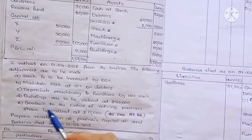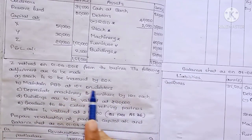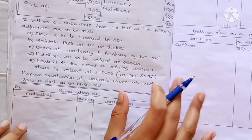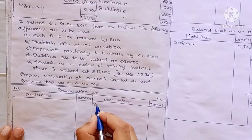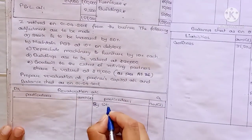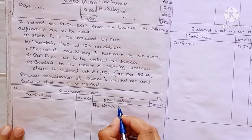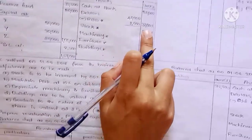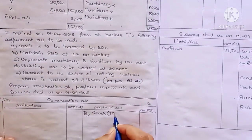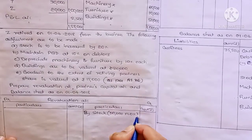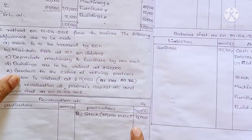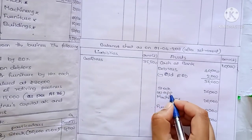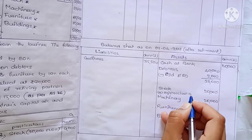The adjustments are added one by one. First, stock is to be increased by 20%. Increase means profit for us — asset increase, so profit is credited. Stock is 20,000 into 20%, which equals 4,000. So the appreciation is 4,000 and the outer column is 24,000.